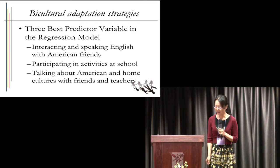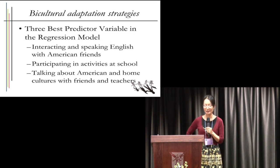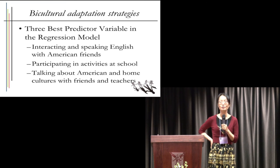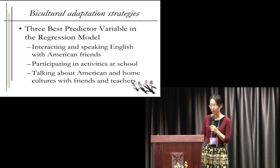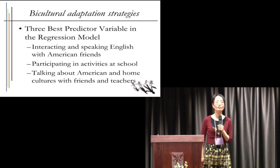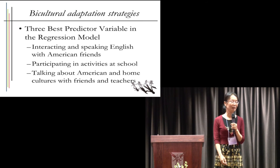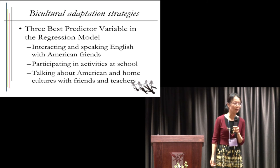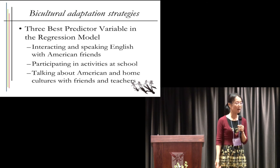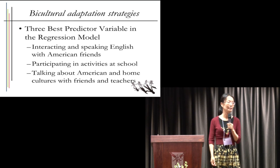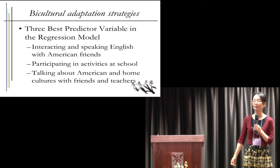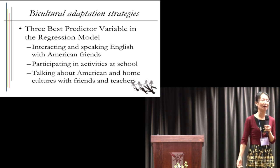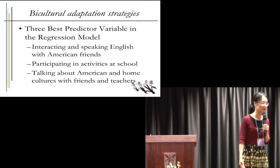For the strategies they used in this adaptation process, we found three most powerful predictors through regression. The first one is whether they can use English to interact with students — the more they use it, the better their bi-cultural identity. The second one is whether they can participate in school activities — the more they participate, the better their bi-cultural identity. The third one is whether they can talk about their home culture in the American context with their friends, especially their American friends and teachers.